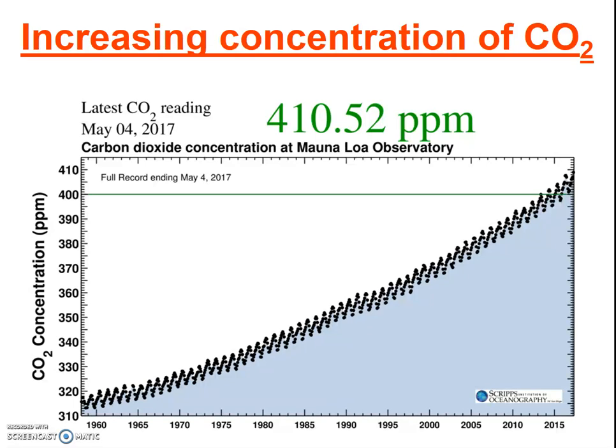This famous graph is called the Keeling curve, named for the scientist who first started taking CO2 measurements at the Mauna Loa Observatory in the 1950s, Charles David Keeling. You can see that despite our understanding since 1977 that CO2 is a driver for climate change, carbon dioxide levels have continued to increase — at an increasing rate even. Students often ask why the curve has a small up-and-down movement each year. The low part is during Northern Hemisphere summers; most of the Earth's land masses and forests are in the Northern Hemisphere, so in the summer, when these forests are actively photosynthesizing, global CO2 levels decline slightly.